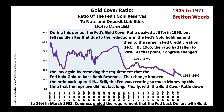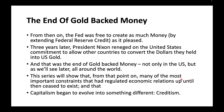But still, the Fed was creating so much money by this time that the reprieve didn't last long. Finally, with the gold cover ratio down to 26% in March 1968, Congress ended the requirement that the Fed back dollars with gold. From then on, the Fed was free to create as much money by extending Federal Reserve credit as it pleased.